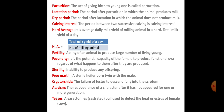Fertility means the ability of an animal to produce a large number of living offspring — it is called fertility. Fecundity is the potential capacity of the female to produce functional ova — it is the capacity of the female to produce functional ova regardless of what happens to them after they are produced. Sterility means the inability to produce any offspring; inability to reproduce is called sterility.